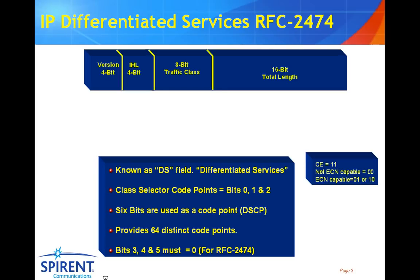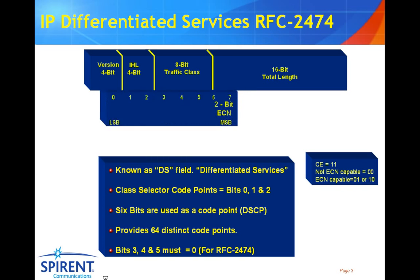Prior to RFC 2474, we had RFC 1394, and prior to that, RFC 791, which goes all the way back to 1981 and the original DARPA network. However, today RFC 2474 is part of the differentiated services family.